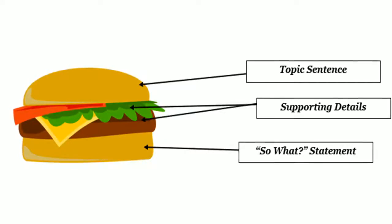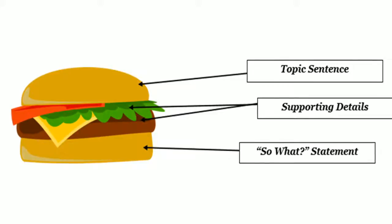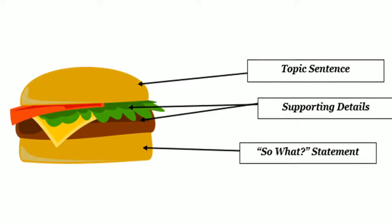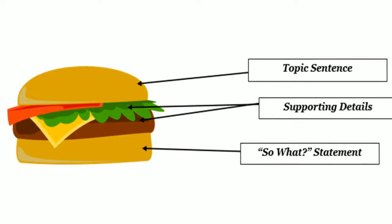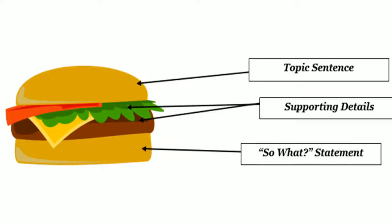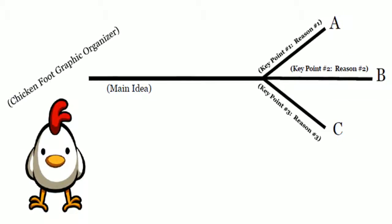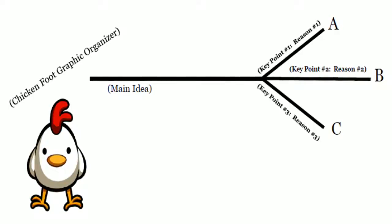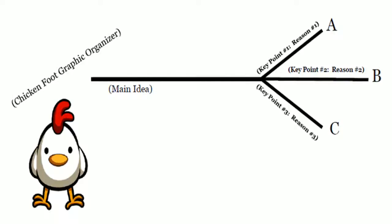Sometimes it's helpful to visualize the body paragraph as something else, like a burger. The first sentence will be your topic sentence, followed by supporting details that includes evidence, and finally you'll wrap it up with a great 'so what' statement. So if you're not sure where to start, let's look at your chicken foot graphic organizer.